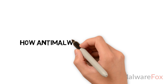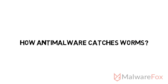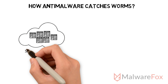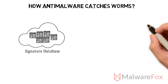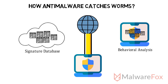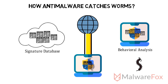How anti-malware catches worms: Anti-malware needs signature-based and behavioral-based analysis to catch worms. It also needs a network monitor feature to catch worms, since they spread through the network.